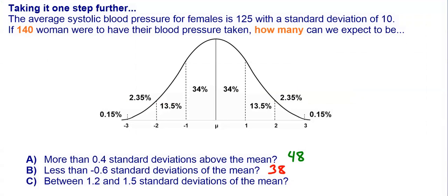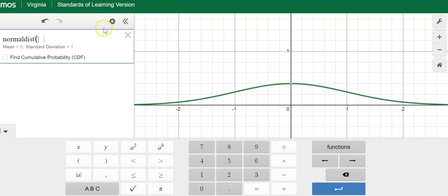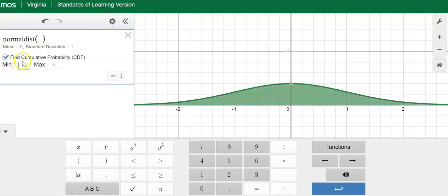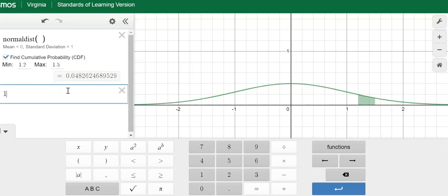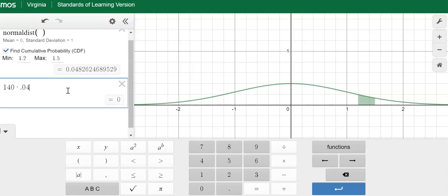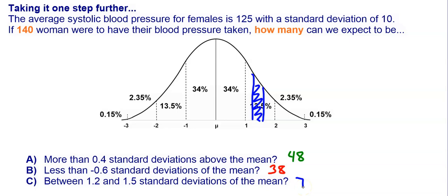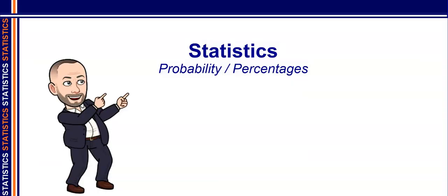Finally, out of those 140 women, how many will fall between 1.2 and 1.5 standard deviations of the mean? That's a very slim margin. On Desmos: keyboard, functions, distribution, normal distribution, leave the mean and standard deviation alone, click the box, and enter between 1.2 and 1.5. That's roughly 4.8%, so 140 times 0.048 gives us 6.7 women, rounded up to 7 women. Normal distribution allows us to find probability and percentages via the area under the curve, and calculators like Desmos allow us to be very precise in those calculations.